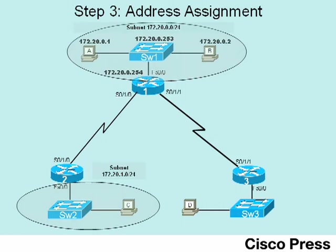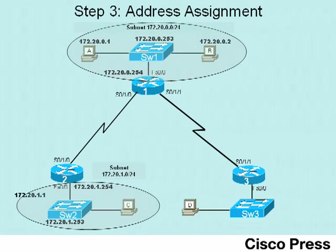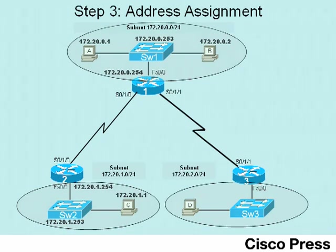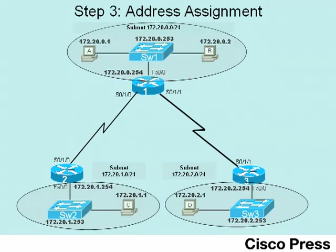Moving to the bottom left subnet, 172.20.1.0: router 2 gets the IP address 172.20.1.254 and switch 2 gets 172.20.1.253, the two largest addresses in that subnet. Host C gets the smallest IP address, 172.20.1.1. For the far right subnet, 172.20.2.0: router 3 gets 172.20.2.254, switch 3 gets 172.20.2.253, and host D gets the smallest address, 172.20.2.1.